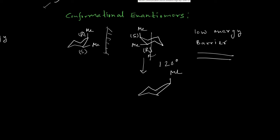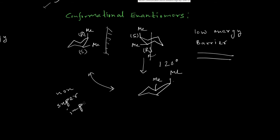After the 120-degree rotation, each methyl group moves to the next position: this methyl goes here, and that methyl goes there. You can clearly see that these two are non-superimposable mirror images. However, we can interconvert these two enantiomers — we have just confirmed they are enantiomers by verifying the mirror image relationship and the non-superimposable condition.